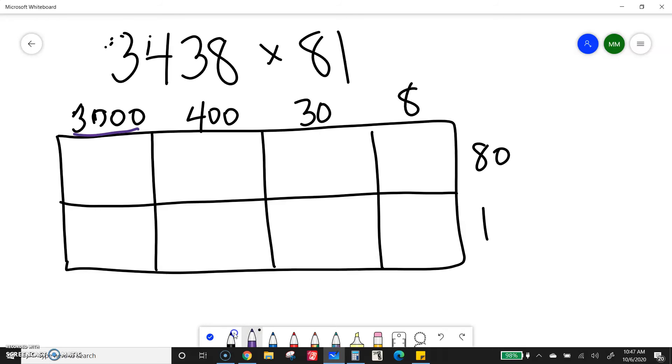My thousands, 3,000 times 80. Well, 3 times 8 is 24. One, two, three, four. One, two, three, four. And then I put my commas. It's always good to wait until after I write all the zeros so I know where the comma goes. Now I have 400 times 80.